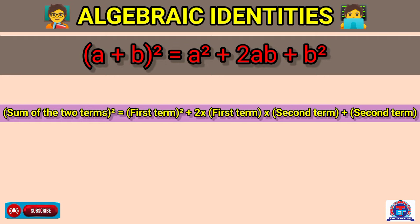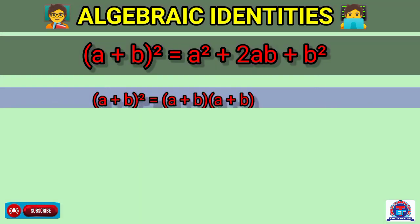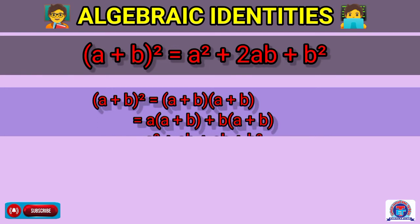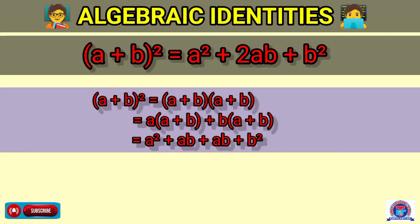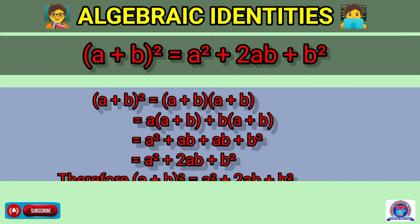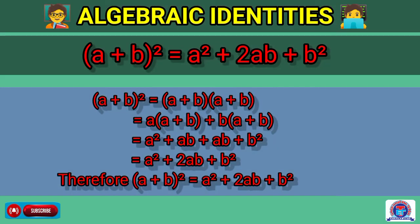Let's see how to derive this expression from a plus b its whole square. We write a plus b its whole square equal to a plus b into a plus b. Now we use the distributive property of multiplication over addition. This gives us a into a plus b plus b into a plus b, which expands to a square plus ab plus ab plus b square. That means a square plus 2ab plus b square. So we derive this formula: a plus b its whole square equal to a square plus 2ab plus b square.